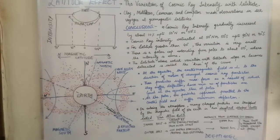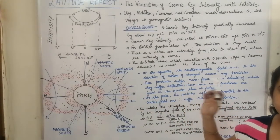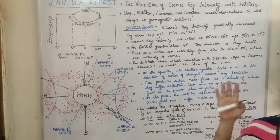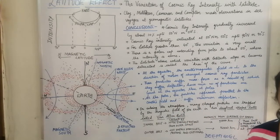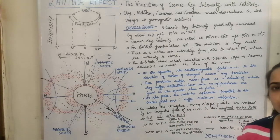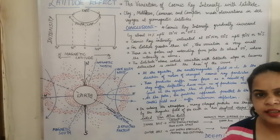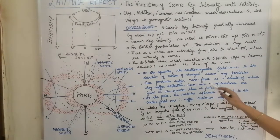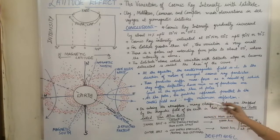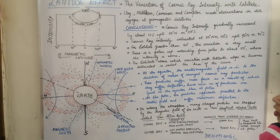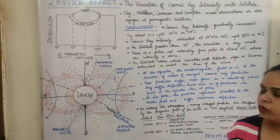In conclusion: from equator to 50 degrees north or south latitude, the cosmic ray intensity increased, beyond which there was no change. Particles suffered maximum force at the equator, and minimum number of particles were found at the equator compared to the poles. At the poles, particles suffered minimum deflection and approached parallel to the earth's field. This is the latitude effect.